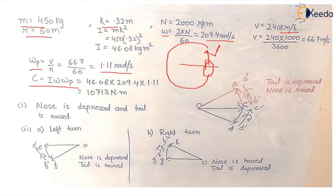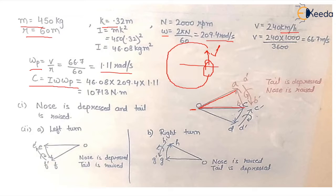For the second part, we need to find the effect on the aircraft for a left or right turn. In the first case the rotor is rotating anti-clockwise and the viewer is at the rear end. Applying the right-hand screw rule for counter-clockwise rotation, the angular velocity vector points forward. OB represents the initial angular velocity. When the body takes a left turn it moves to a new position represented by AB, and the change in angular velocity is shown by vector BA. The applied couple is along PA.